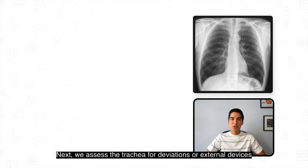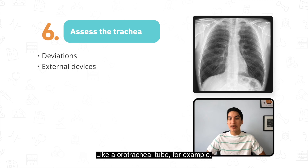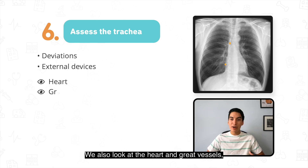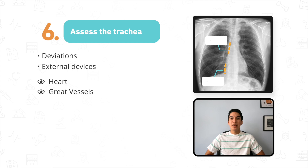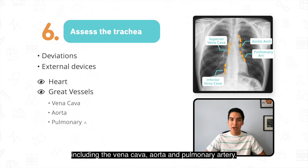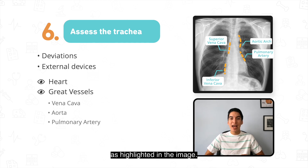Next we assess the trachea for deviations or external devices like an orotracheal tube, for example. We also look at the heart and great vessels including the vena cava, aorta, and pulmonary artery. We check that these structures are in the right locations as highlighted in the image.